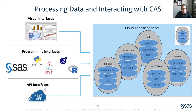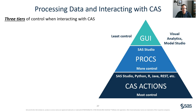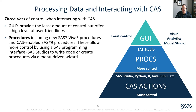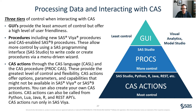There are three tiers of control when interacting with CAS. First, GUIs provide the least amount of control but offer the highest level of user-friendliness. Next, procedures — including new SAS Viya procedures and CAS-enabled SAS 9 procedures — allow more control by using a SAS programming interface such as SAS Studio to write code or create procedures via a menu-driven wizard. Lastly, CAS actions through the CAS language and the CAS procedure known as PROC CAS provide the greatest level of control and flexibility.